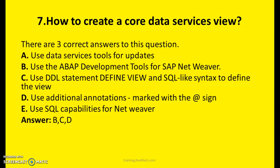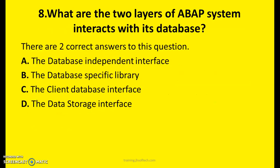Question Eight: What are the two layers of how an ABAP system interacts with its database? There are two right answers. A: The database independent interface. B: The database specific library. C: The client database interface. D: The data storage interface. The answers are A and B — the database independent interface and the database specific library.